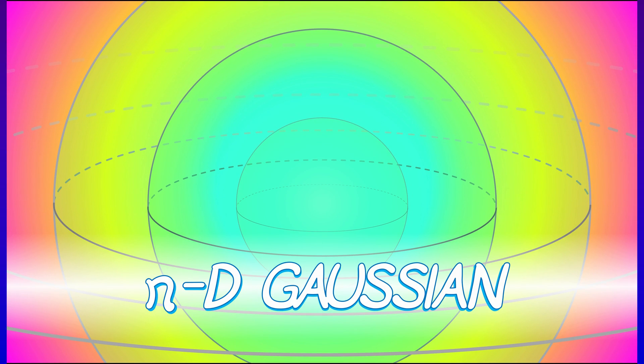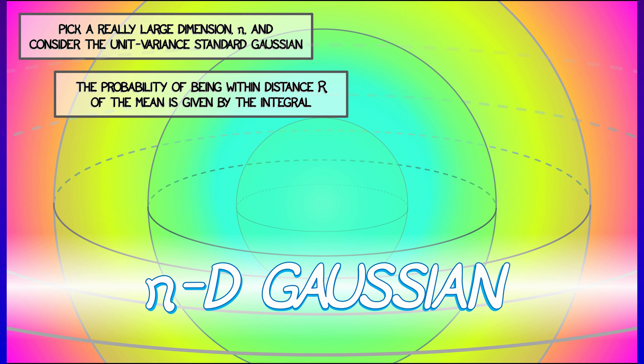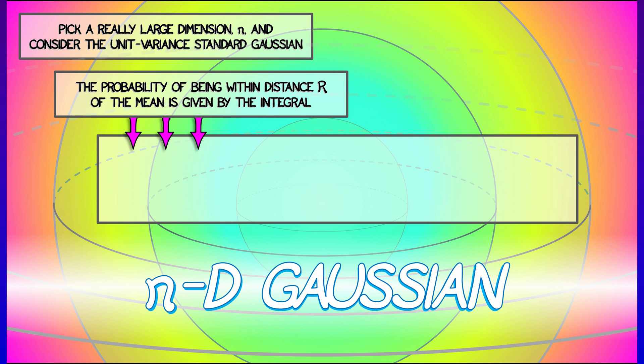Let's consider what happens with an n-dimensional Gaussian for high n. Let's say that we just have mean zero and unit variance. Then, what's the probability that you're within distance capital R of that mean? Well, of course, that probability is given by integrating the probability element, by integrating over a ball of radius capital R, the Gaussian, one over square root of two pi to the n, e to the minus one-half length of x squared dx.